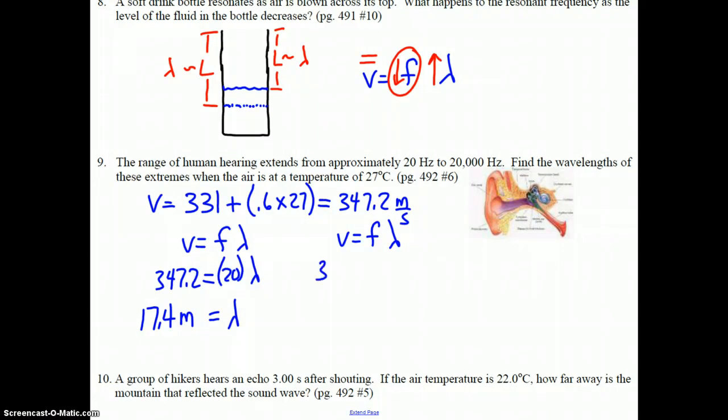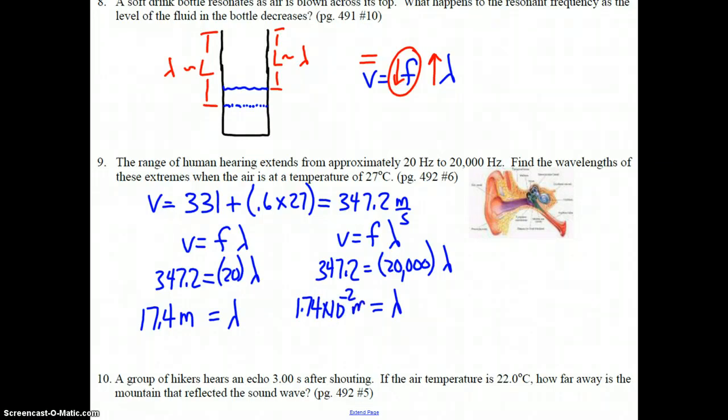Repeat for the other extreme. 347.2 equals 20,000 times lambda. This gives us a wavelength of 1.74 times 10 to the negative 2 meters, or 1.74 centimeters. That's quite an extreme. That means the distance for compressions at 20 hertz is 17.4 meters between compressions, whereas at 20,000 hertz, it's 1.74 centimeters.